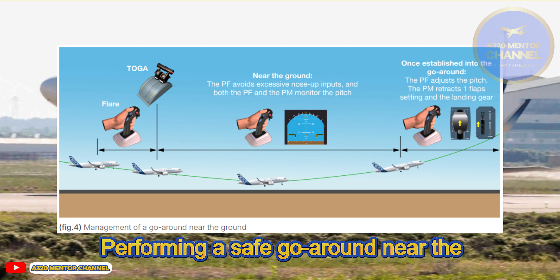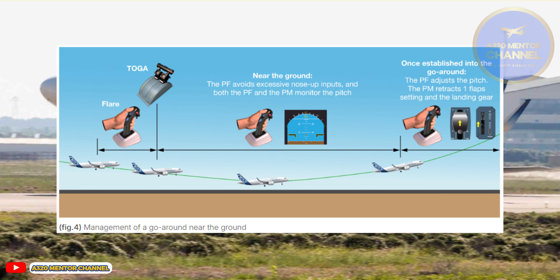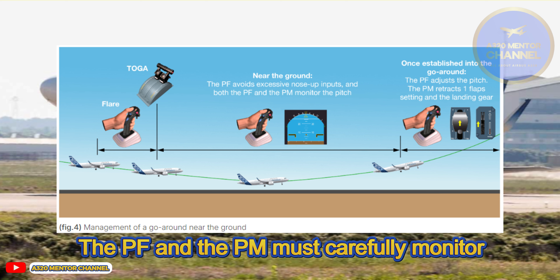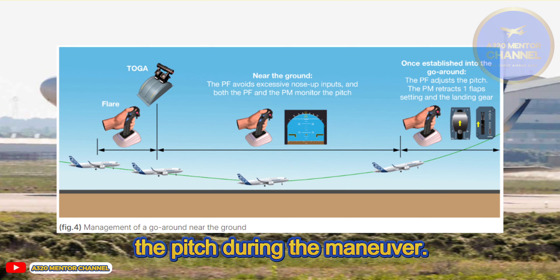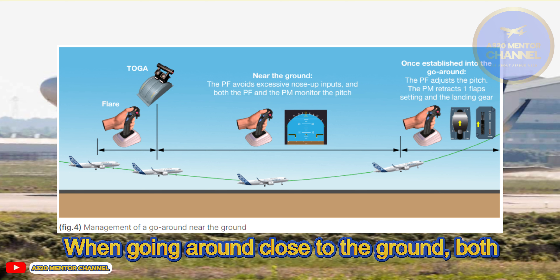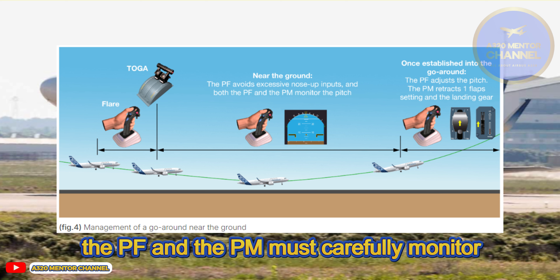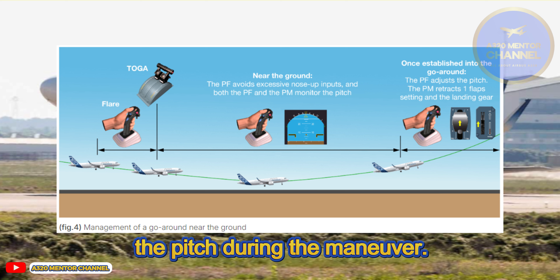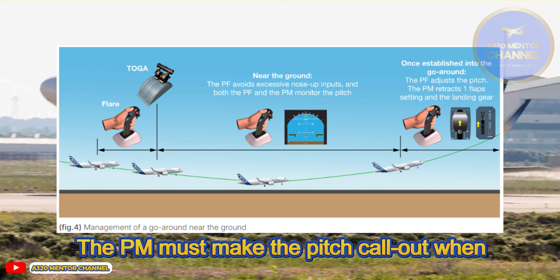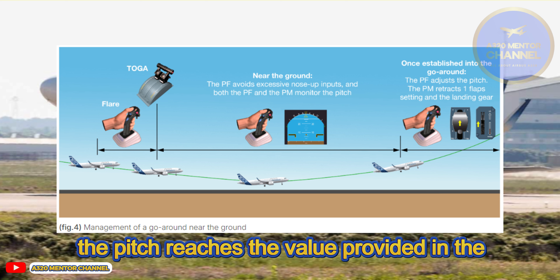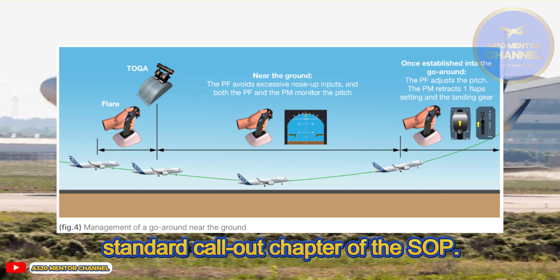Performing a safe go-around near the ground: Both the PF and the PM must carefully monitor the pitch during the maneuver. When going around close to the ground, the PM must make the pitch call-out when the pitch reaches the value provided in the standard call-out chapter of the SOP.